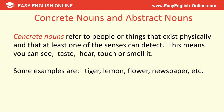Concrete nouns, sometimes known as material nouns, refer to people or things that exist physically and that at least one of the senses can detect — you can see, taste, hear, touch, or smell them. Some examples are a tiger — you can see it, hear it, or touch it. A lemon — you can taste it or touch it. A flower — you can smell it or see it. A newspaper — you can touch it.